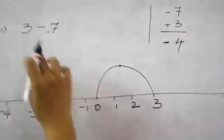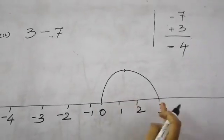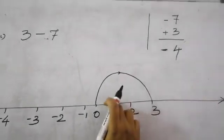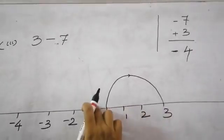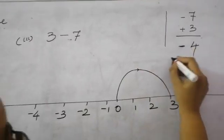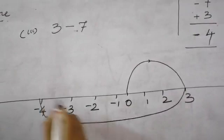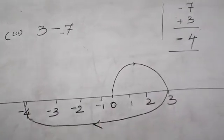So start 0 to plus 3. And then when you are minus 7, when you are minusing you have to go back side. Minus 1, minus 2, minus 3, minus 4, minus 5, minus 6, minus 7. Your answer is at minus 4. So you can take the arrow on the left side.